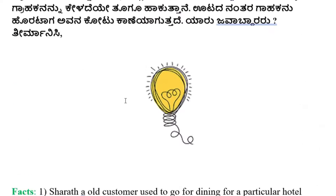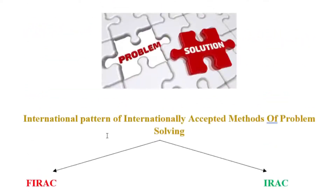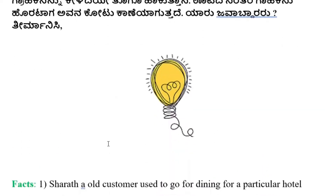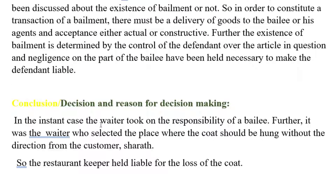When there is a concept of bailment, it is the duty of the bailee to return the goods to the plaintiff — that is, the bailor. The conclusion is that in the instant case, the waiter took on the responsibility of a bailee. The waiter includes the restaurant owner also, as the restaurant waiter is acting on behalf of the restaurant owner. Further, it was the waiter who selected the place where the coat should be hung, without directions from the customer, Sharath. So the restaurant keeper is held liable for the loss of the coat.